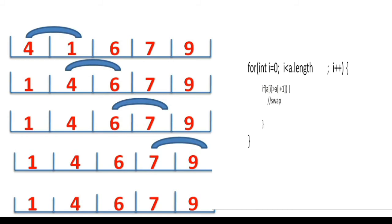For more details on the swapping logic, check the video linked in the description. So we have a loop inside which we have a condition to check the adjacent elements, and if the first element is greater than the next we swap. This handles one pass. However, there is a problem: since we are checking a[i+1], if we go up to a.length we'll get an ArrayOutOfBoundsException for the last index. So we have to iterate till a.length minus 1. This inner loop handles one round, but we need to keep doing rounds until the array is sorted.